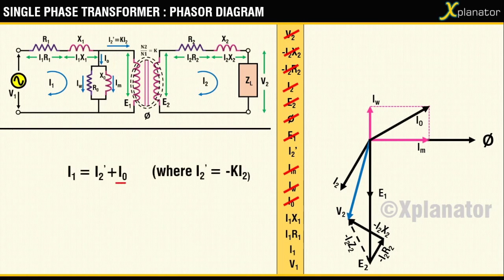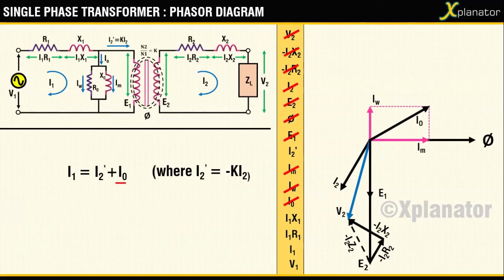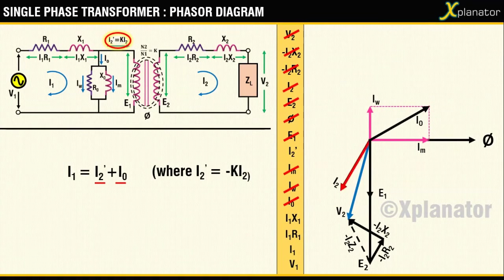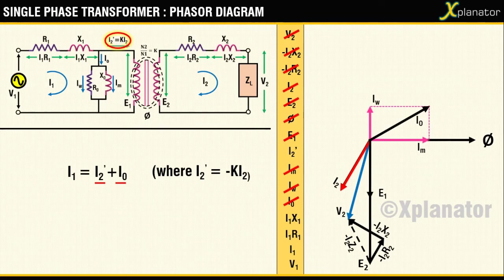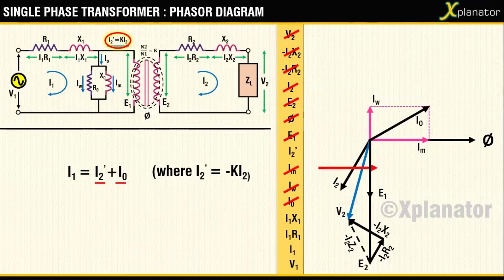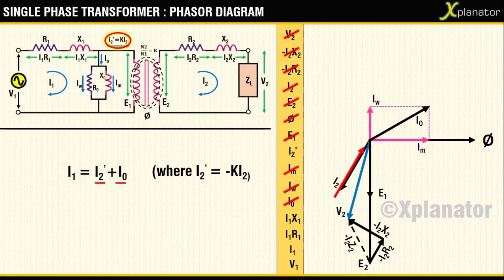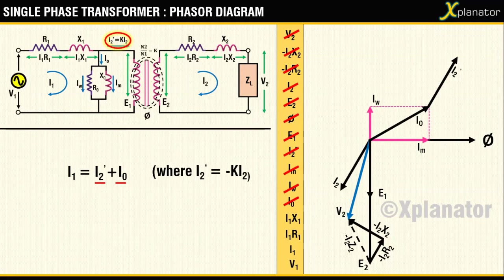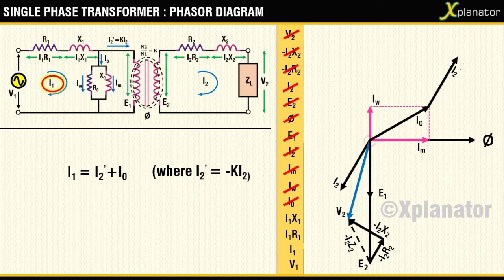Coming to the second equation again, I0 has been drawn and only I2 prime is pending. You can see from the relation shown in the bracket that I2 and I2 prime are in anti-phase, which means to get I2 prime, all you have to do is reverse the direction of I2. So reverse this vector I2 and add it to I0. The resultant of I0 and I2 prime will give you primary current I1.